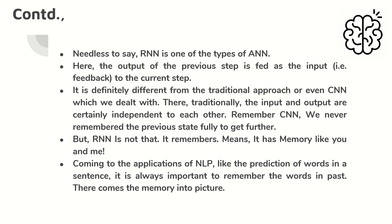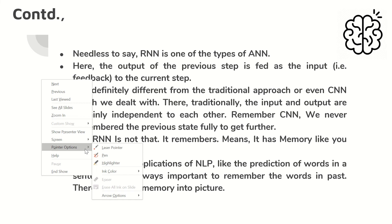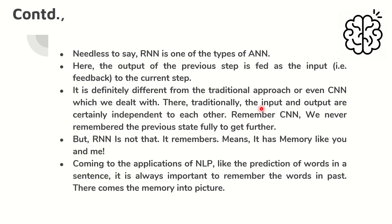RNN is one of the types of ANN — artificial neural network. The most important crux is that the output of the previous step is fed as the input to the current step. This means we are going to consider the previous stage output as well to determine the current state output. This approach is certainly different from the traditional CNN approach we covered in the previous sessions, where we did not care about the previous stage output at all.